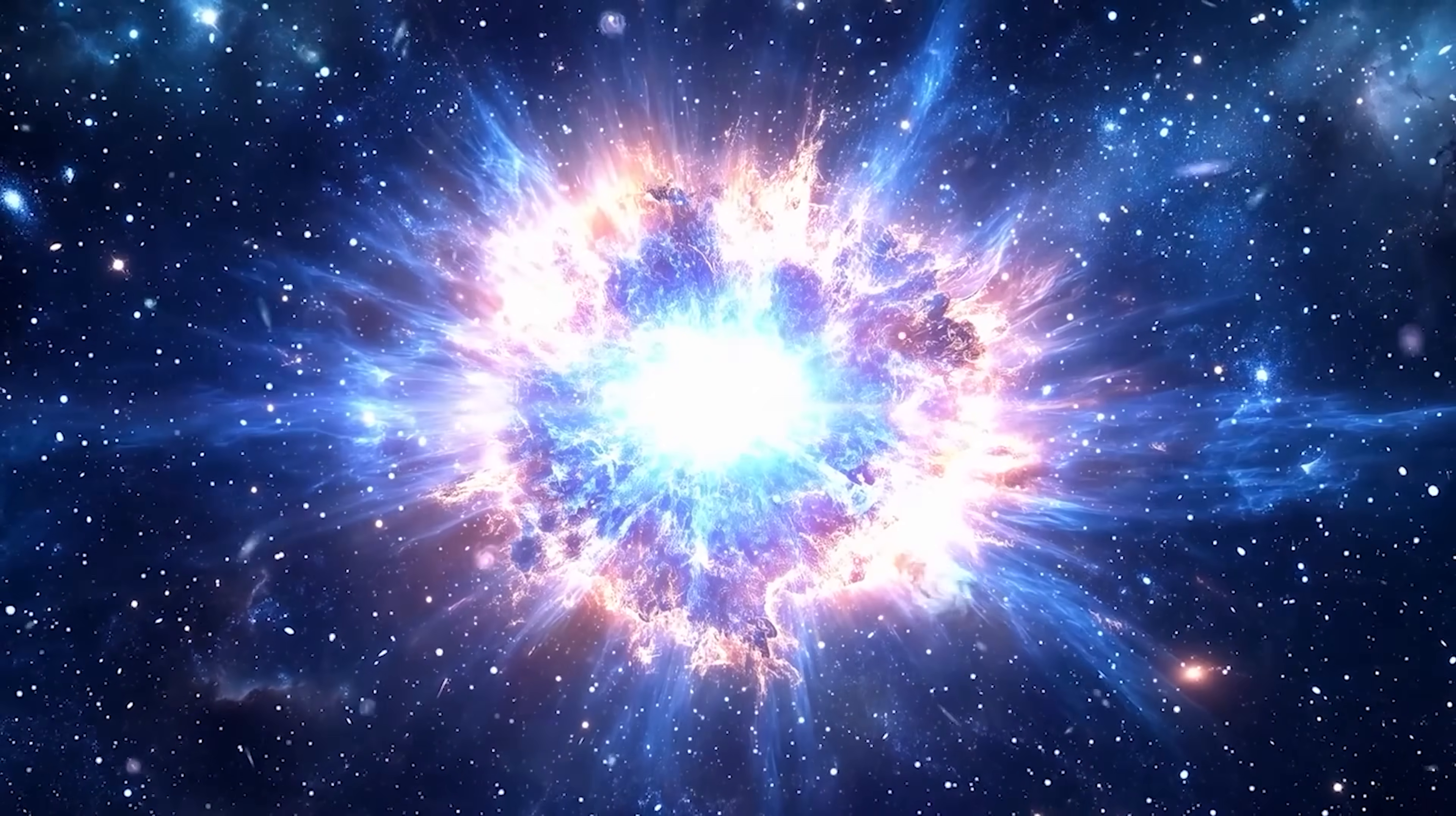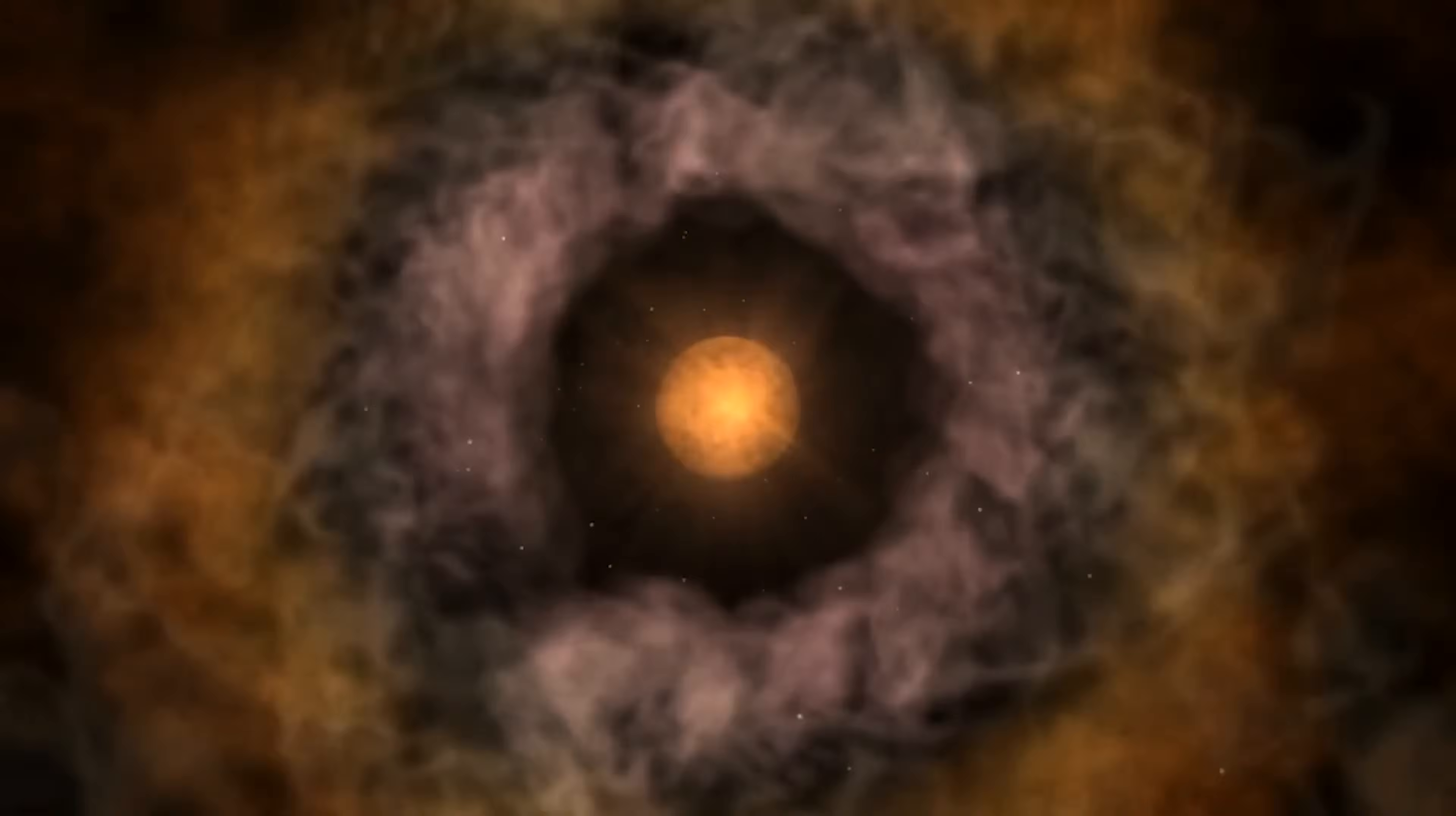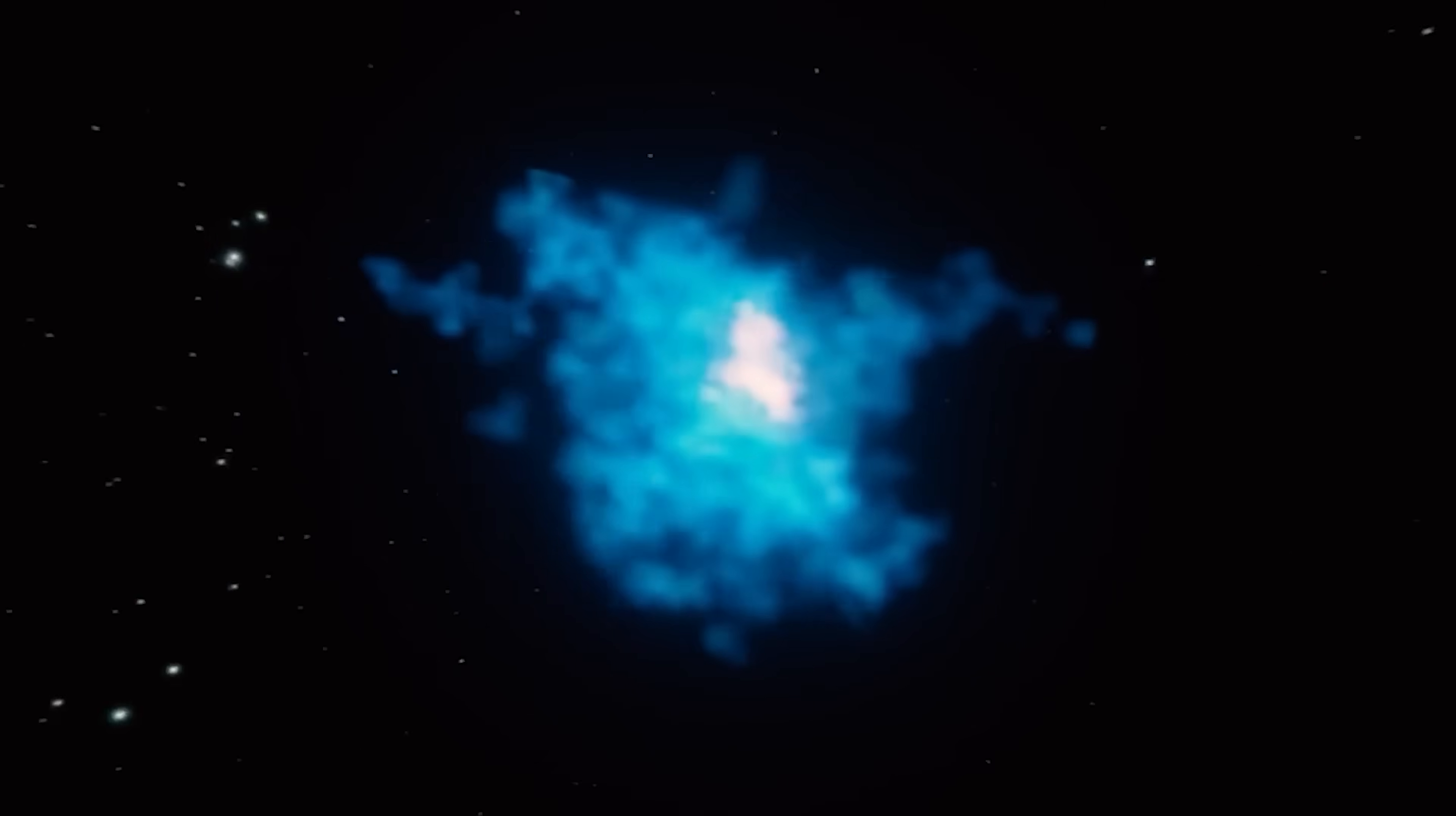The observations came from several regions of Webb's deep surveys, including the JADES and CEERS fields, areas chosen for their quiet backgrounds and high visibility in the infrared, where ancient starlight drifts after more than 13 billion years of cosmic expansion. In one frame after another, compact blue specks appeared.